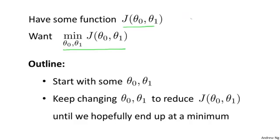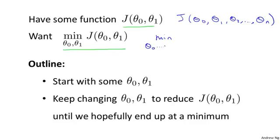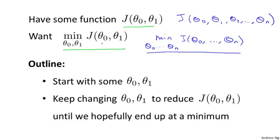It turns out that gradient descent actually applies to more general functions. So imagine if you have a function j of theta 0, theta 1, theta 2, up to some theta n, and you want to minimize over theta 0 up to theta n of this j. Gradient descent is an algorithm for solving this more general problem. But for the sake of brevity and succinctness of notation, I'm just going to pretend I have only two parameters throughout the rest of this video.